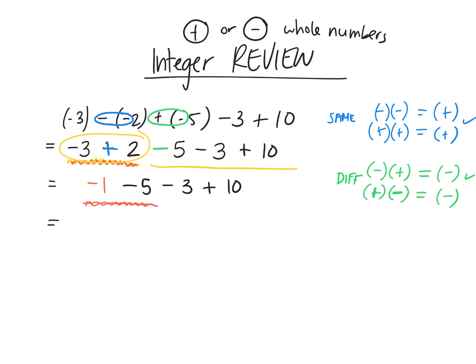So negative 1, take away 5, is negative 6. So I've just done that. And now, again, I'm just going to copy the rest of my sentence. This is like English, left to right. I have negative 3 plus 10. Negative 6, take away 3. If you need to use your calculator, you can. What's negative 6 taking away 3 from negative 6? We get negative 9. And I have to write the plus 10 because I didn't do anything with that.